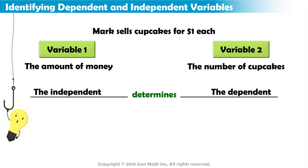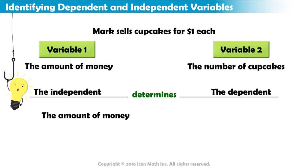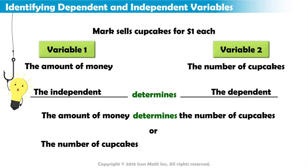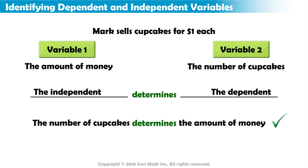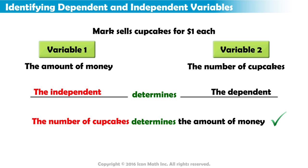Which sentence makes more sense? The amount of money Mark earns determines the number of cupcakes he sells. Or, the number of cupcakes Mark sells determines how much money he earns. Since Mark earns money each time he sells a cupcake, the number of cupcakes he sells will determine the amount of money he earns altogether. So, the number of cupcakes he sells is the independent variable. The total amount of money he earns is dependent on the number of cupcakes he sells, making it the dependent variable.